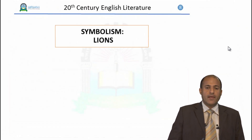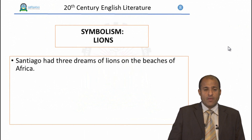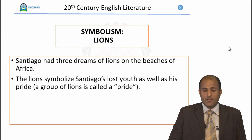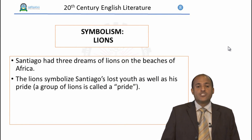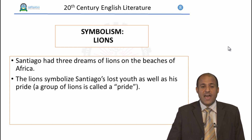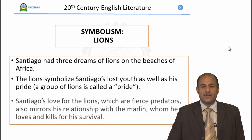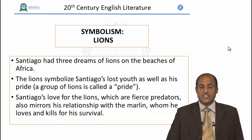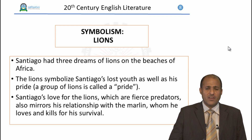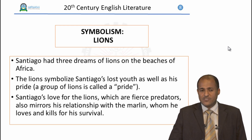The next symbol is that of the lions. Santiago had three dreams of lions on the beaches of Africa. These dreams symbolize Santiago's lost youth as well as his pride — linguistically, a group of lions is called a pride. Santiago's love for the lions, which are fierce predators, also mirrors his relationship with the marlin, whom he loves and kills for his survival.